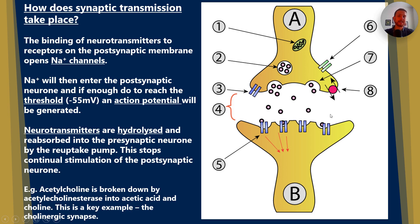Now a key example that you need to know about is acetylcholine, or the cholinergic synapse. That's what we call a synapse that utilizes acetylcholine as the neurotransmitter. It gets broken down by an enzyme called acetylcholine esterase into acetic acid and choline. Interestingly, acetic acid is also known as ethanoic acid. Now this is a really important example that often comes up in the exams.